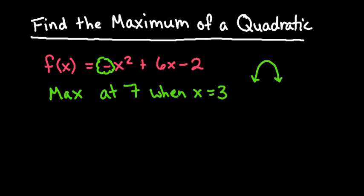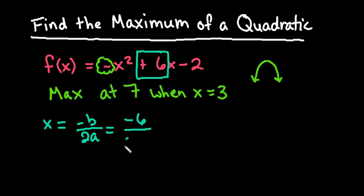Just to verify that that was correct, remember to do hand calculations. The x-coordinate is always negative b over 2a. And so if you plug this in right here, we would have negative 6 over 2 times negative 1. And we can see that if I divide this out, it gives me 3. So that just verifies that my x equals 3 is correct.